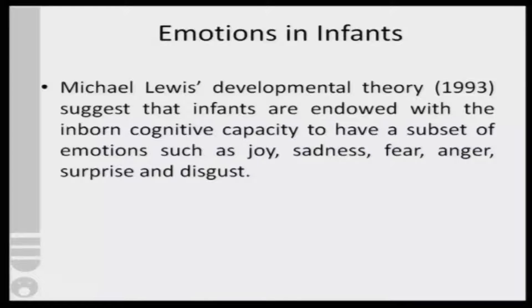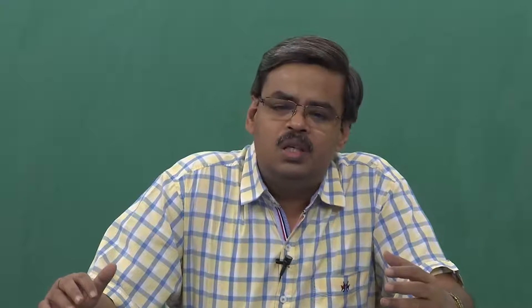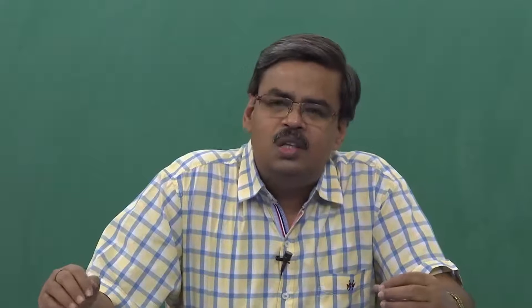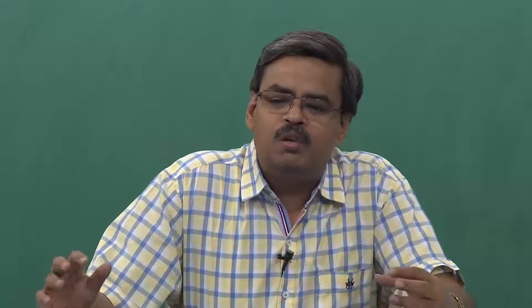Let us now understand how a human infant learns to express through the face. Lewis proposed a developmental theory suggesting that infants are basically endowed with the inbound cognitive capacity to have a subset of emotions such as joy, sadness, fear, anger, surprise, and disgust. These six basic emotions — Lewis's developmental theory says that human infants already have this inbound cognitive capacity.